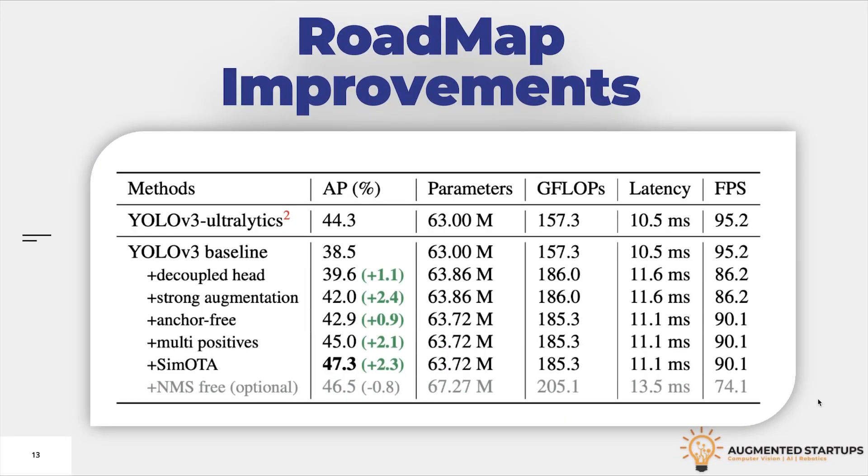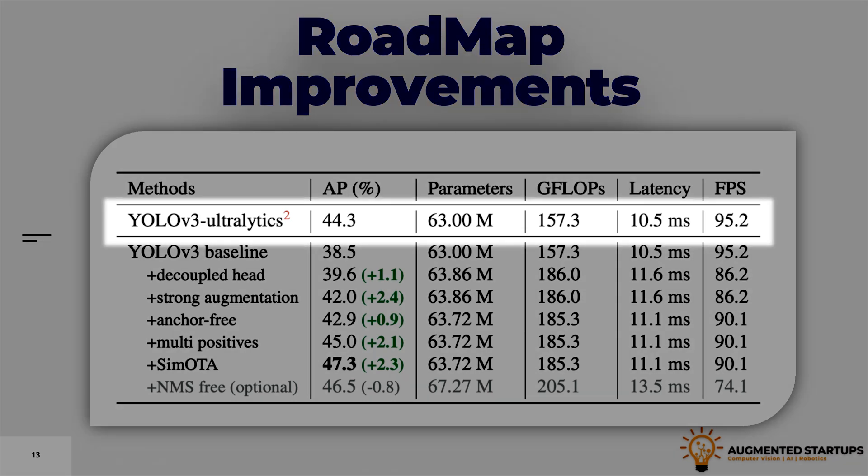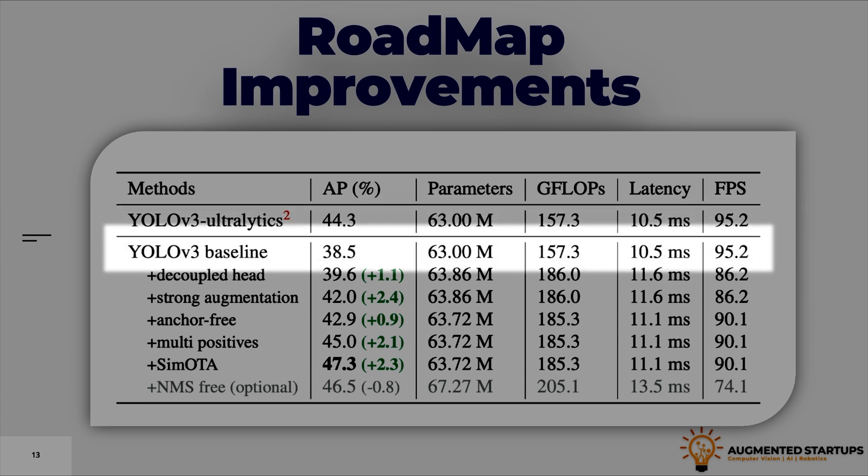Great, now let's understand how these key components have impacted the model's performance. This table is showing the incremental improvements of each key component when combined. The original YOLO V3 was getting an average precision of 44% and in YOLO X, they started with the baseline YOLO V3 with 38.5 AP.